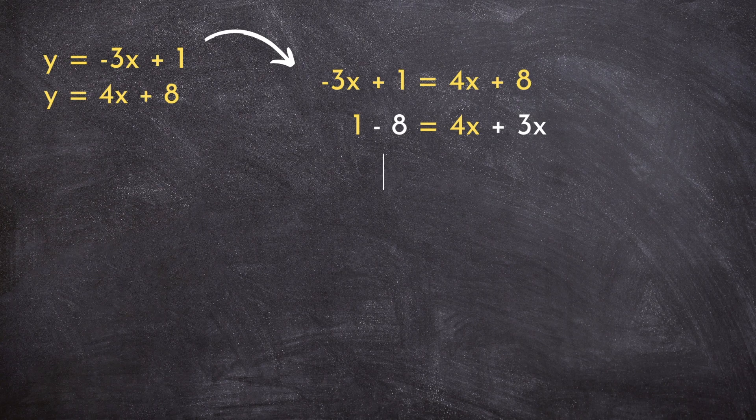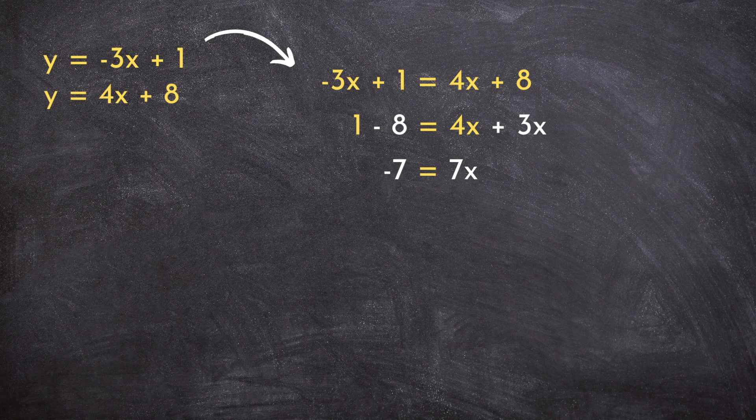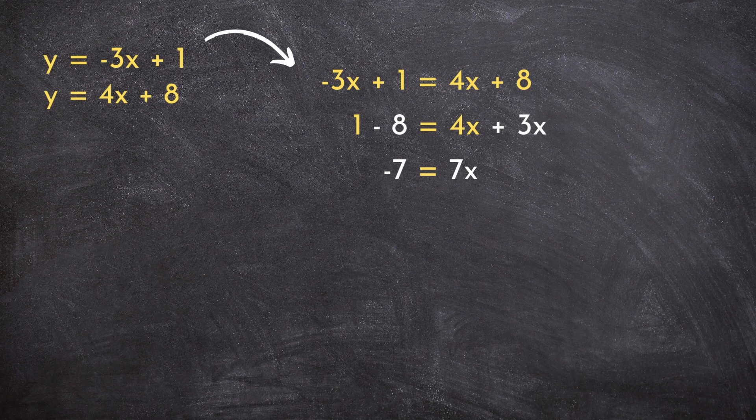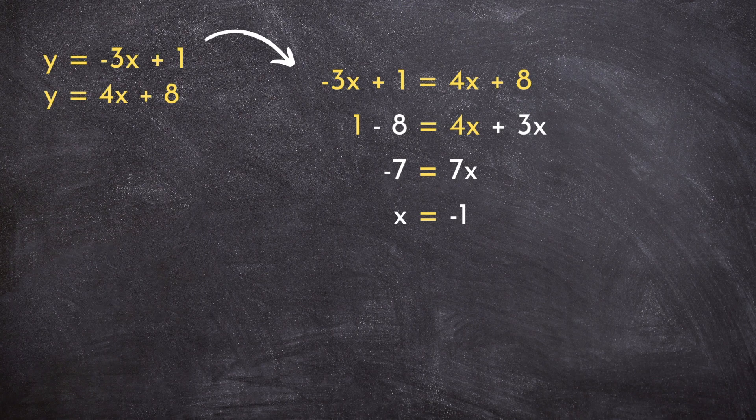And we can collect our terms without an x on the left side of the equation by subtracting 8 over to the other side. We can collect any term with an x and separately collect any term without an x, leaving us with a simple one step equation. Dividing both sides by 7 will give us an x value of x equals negative 1.